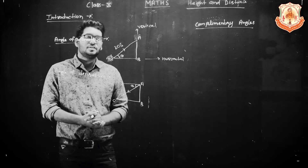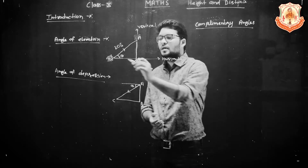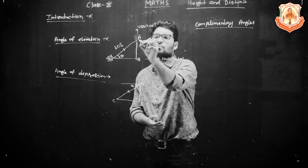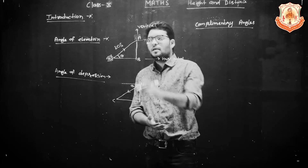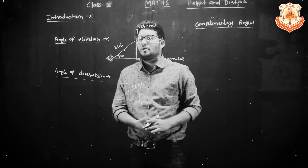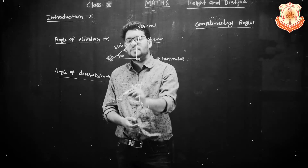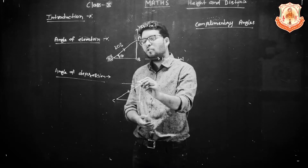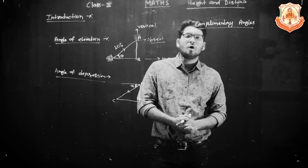First, Angle of Elevation. What is Angle of Elevation? When the object is downward and the observer is at top, then the angle of elevation is called Angle of Depression. Theta is the Angle of Depression.